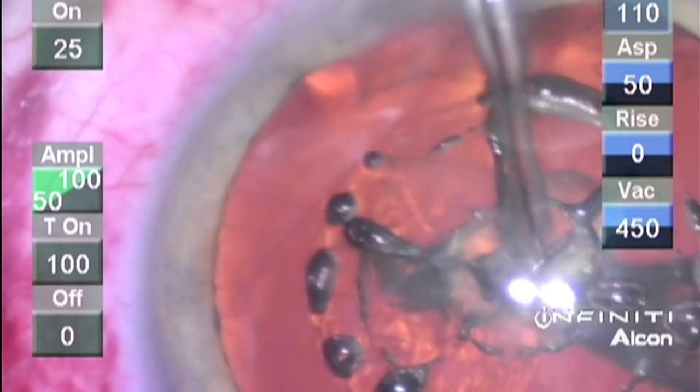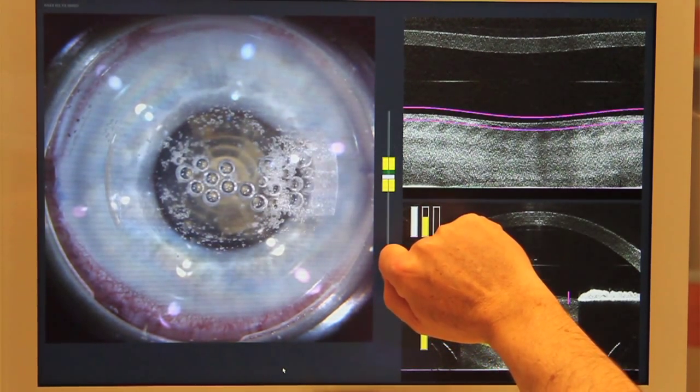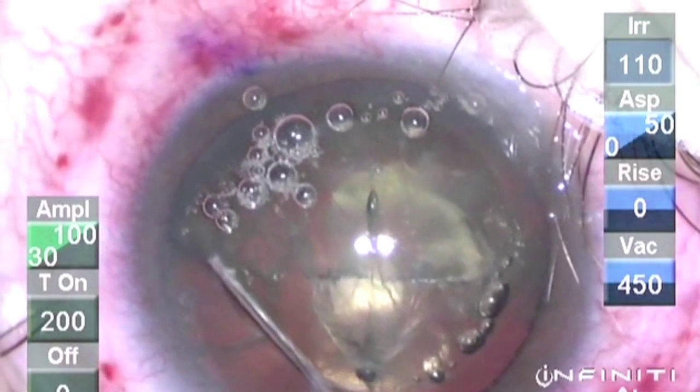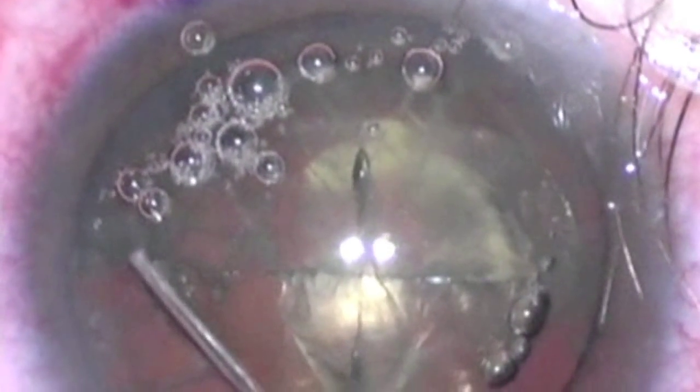These incomplete capsulotomies with tags, adhesions, or serrations create challenges of their own, particularly when a radial tear occurs, as seen in this video, where hydrodissection causes the anterior capsule to tear, seen here in the subtle pop of these bubbles near the capsule.